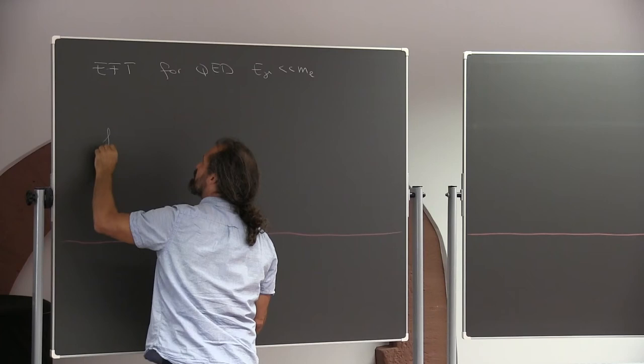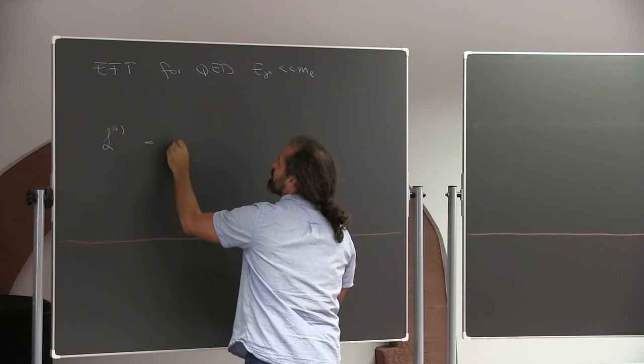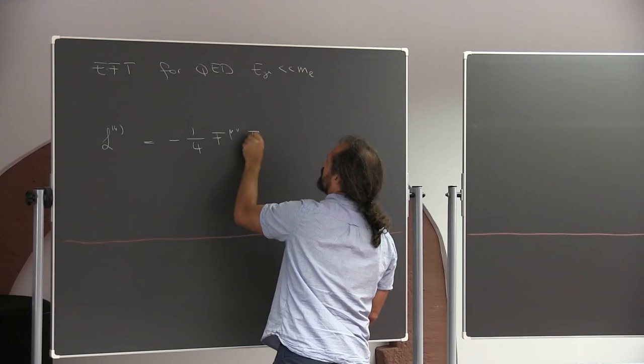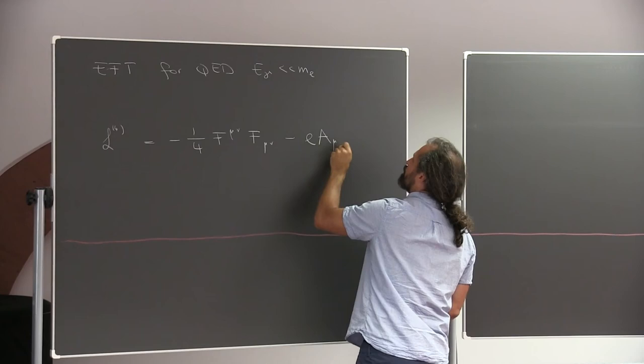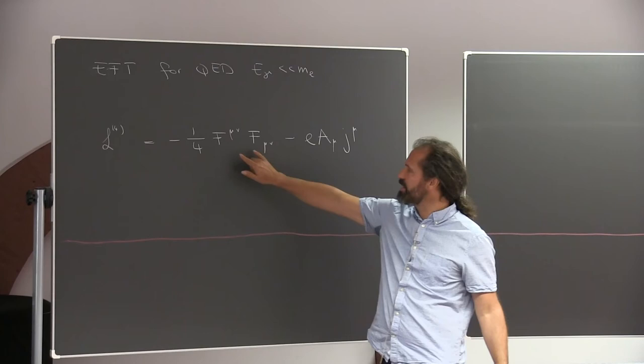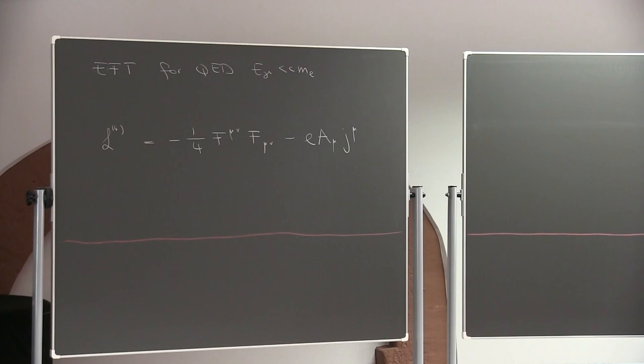We started writing down Lagrangians. First a Lagrangian with dimension-4 operators. This included two terms: one is a standard kinetic term for the photon field, so this Lagrangian just describes free photons. And we introduced a little bit of an interaction by having a background classical current which couples to this photon field, which is the second term.